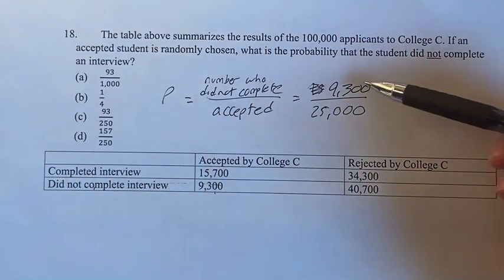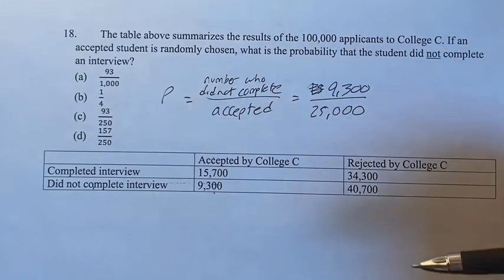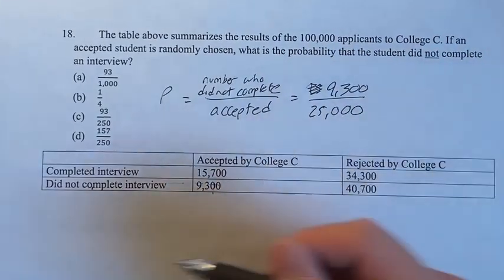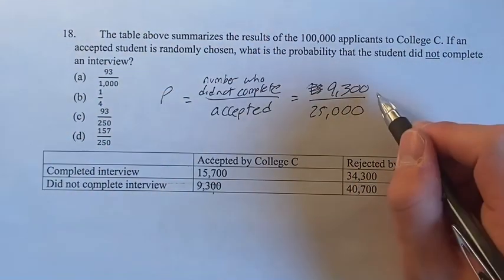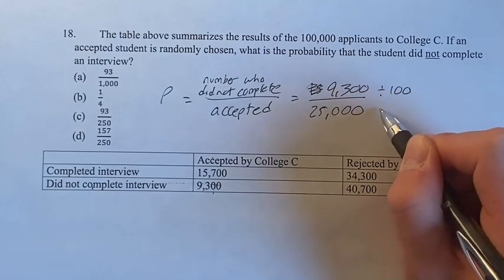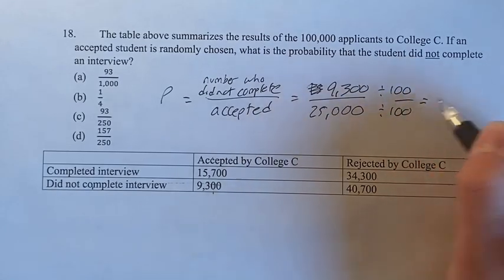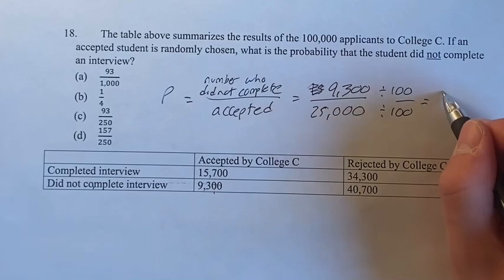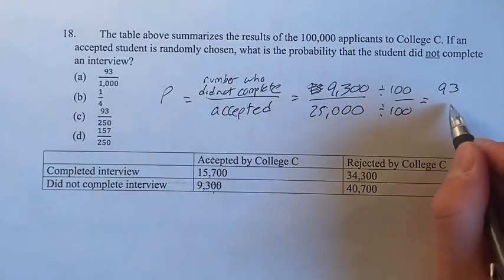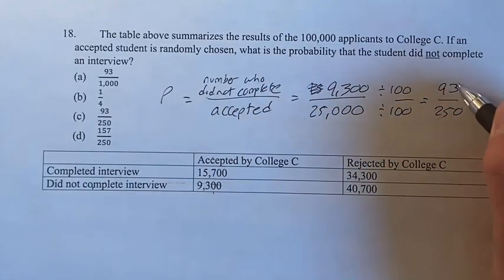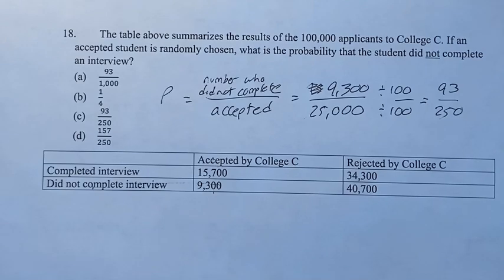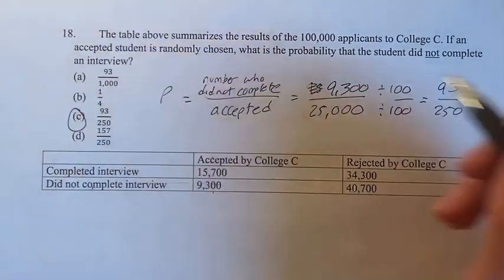So your probability is 9,300 over 25,000. And this doesn't look exactly like any of these, but we have to just simplify it. Divide the top and the bottom by 100. 9,300 divided by 100 is 93. 25,000 divided by 100 is 250. 93 divided by 250 is gonna be your final answer, or C.